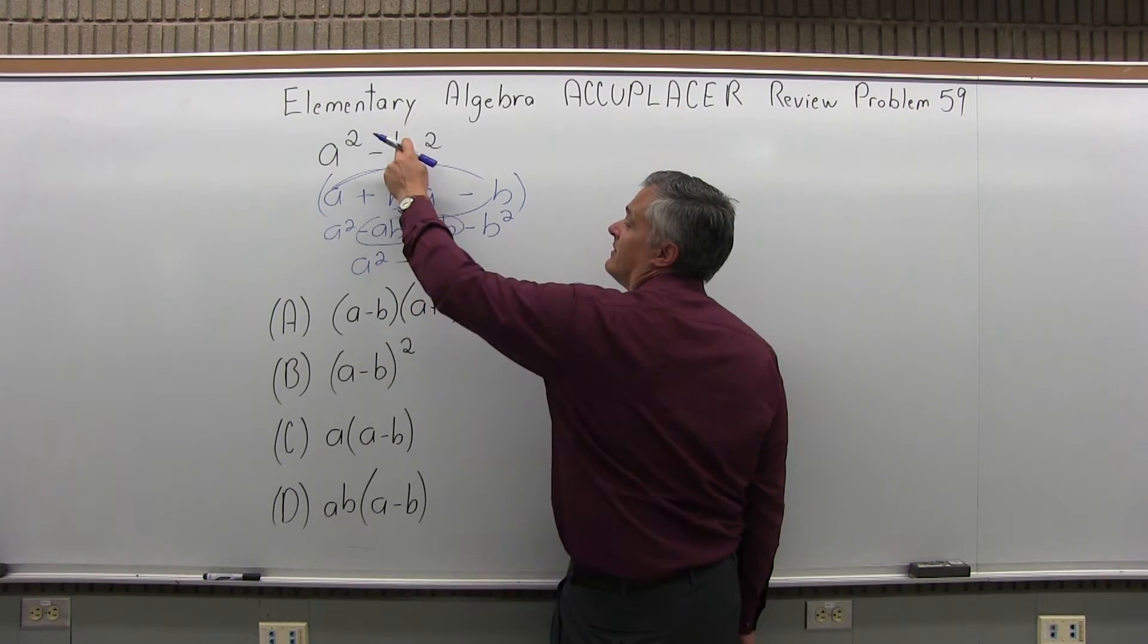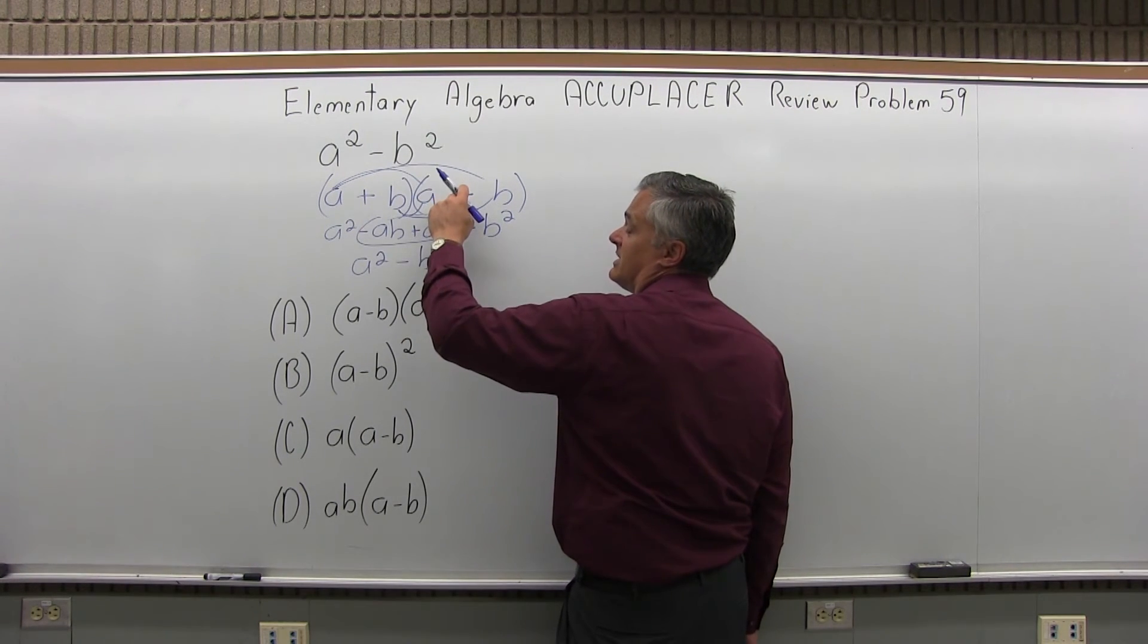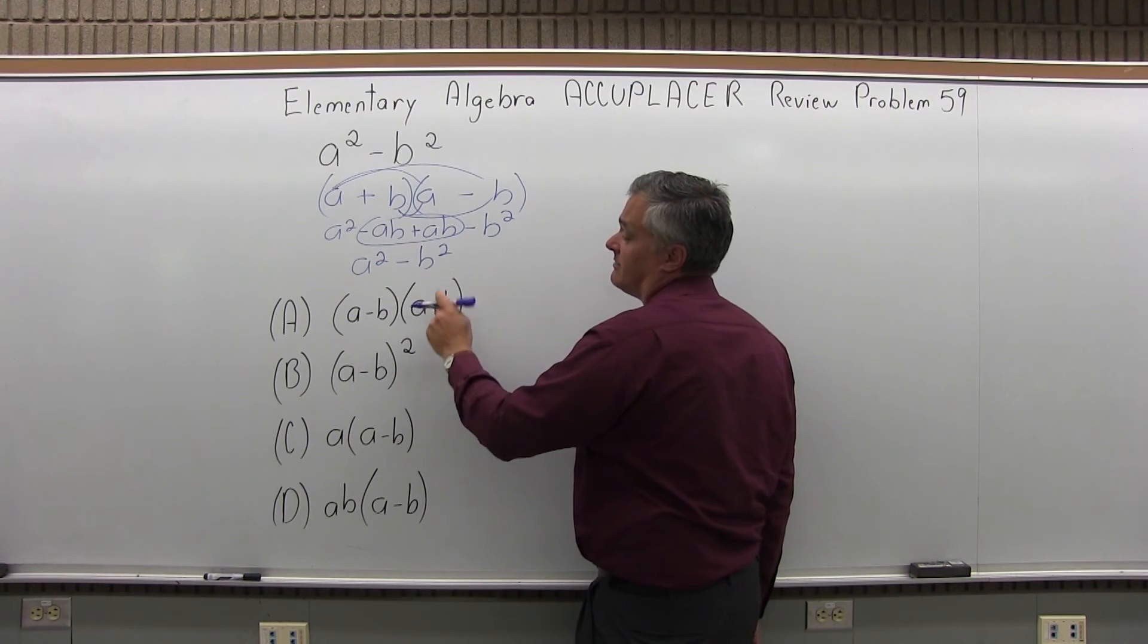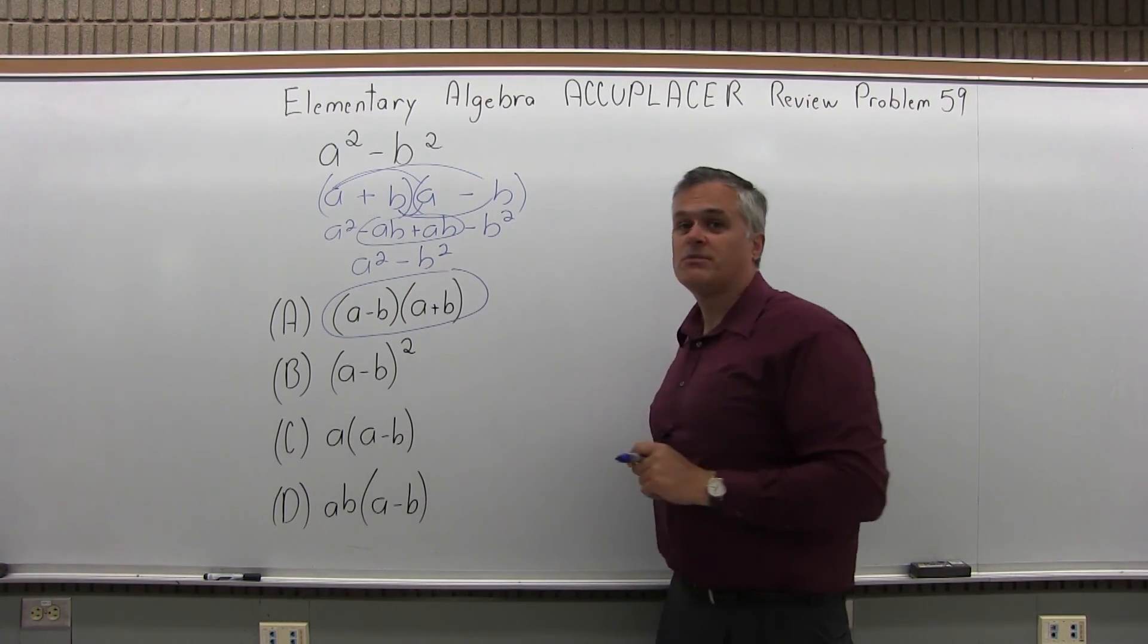And sure enough, a squared minus b squared is equal to a plus b times a minus b, which could also be written a minus b times a plus b. So the answer to number 59 is option A.